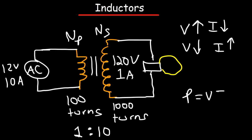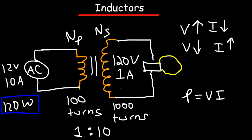Power is voltage times current. So 12 times 10 gives us a power of 120 watts. Power is the rate at which energy is transferred. So if you see 120 watts, that means every second, 120 joules of energy is being transferred. On this side, it's the same: 120 times 1 gives us 120.